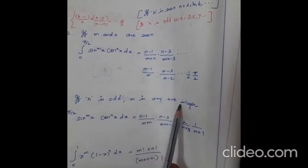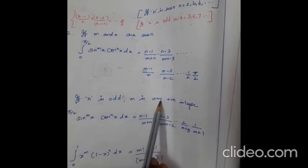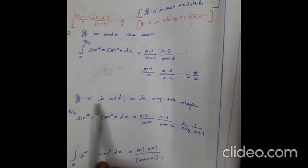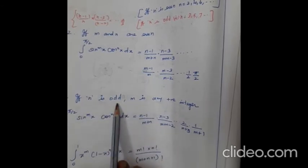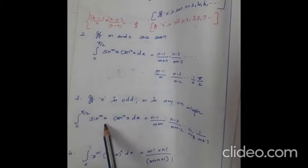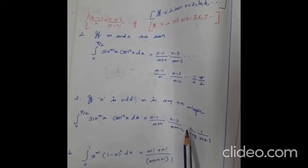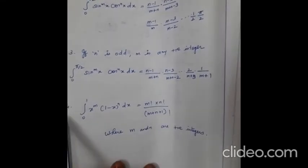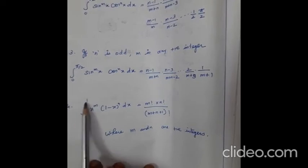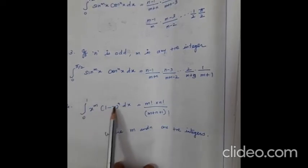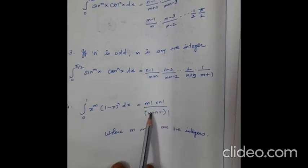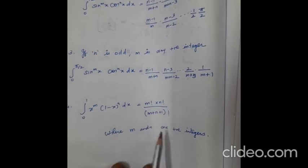If n is odd — and m is either odd or even — we apply: integral from 0 to π/2 of sin^m(x) · cos^n(x) dx equals (n−1)/(m+n) · (n−3)/(m+n−2) etc. up to 2/(m+3) · 1/(m+1). The fourth formula has limit 0 to 1: the integral from 0 to 1 of x^m · (1−x)^n dx equals m! · n! / (m+n+1)!, where m and n are positive integers.